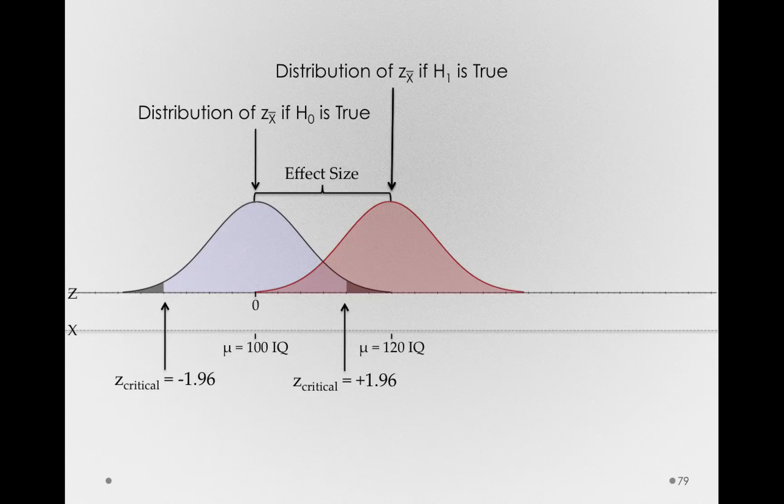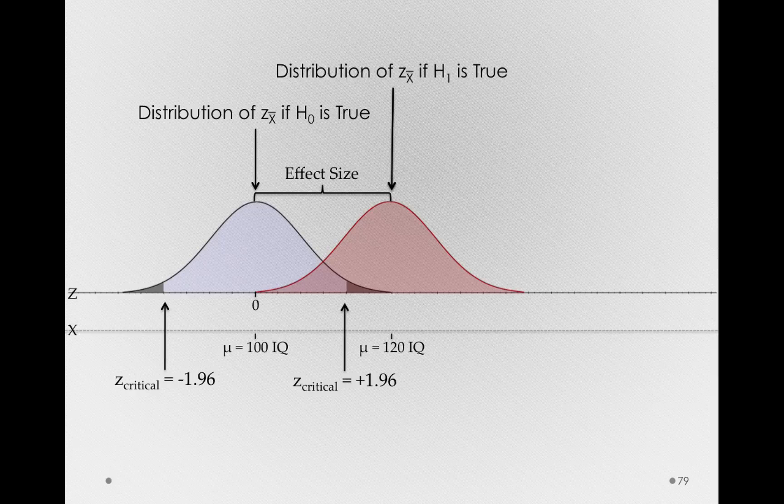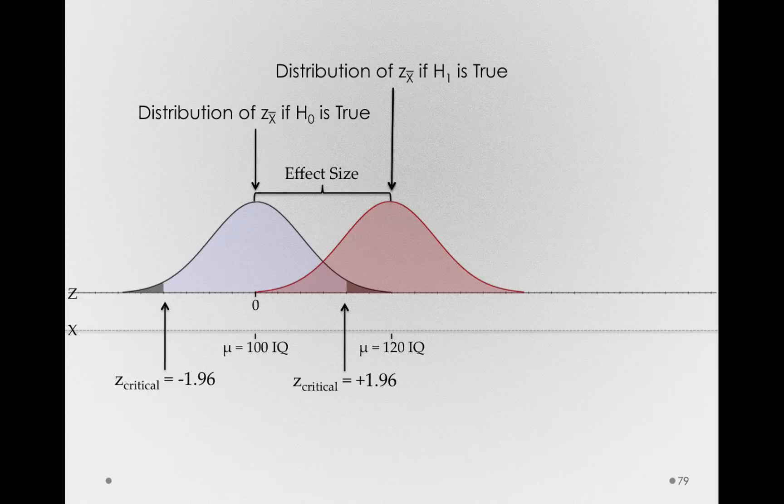But importantly, we've shifted this distribution. And that's the true effect that we're talking about. On average, we've shifted everybody by 20 IQ points. So the types of sample means we're likely to get are 20 points higher on average.